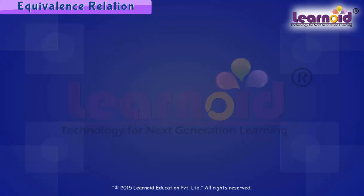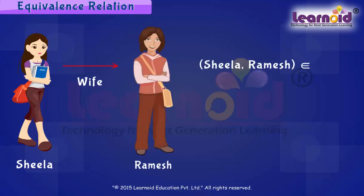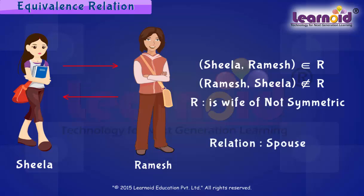The relation 'wife' is not symmetric — 'Sheila is wife of Ramesh' does not imply 'Ramesh is wife of Sheila.' But the relation 'spouse' is symmetric: Sheila is spouse of Ramesh and Ramesh is spouse of Sheila. Similarly, you can check any relation for being symmetric.